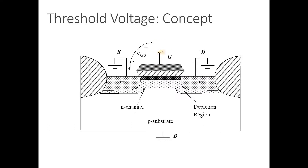When you apply a gate-to-source voltage VGS, the channel is not created immediately — it is created only after a certain potential at the gate is applied. That minimum potential required to turn on your device is called threshold voltage. The channel is formed, and a depletion region is present at the interface.